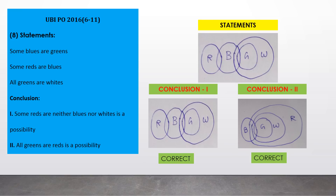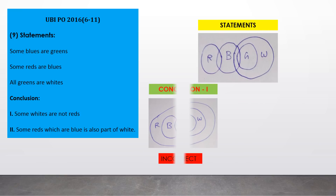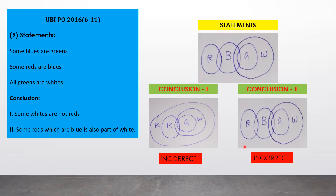Question 10 — Same statements. Conclusion one: 'some whites are not red.' To disprove, draw complete white inside red, then check — 'some blues are greens' yes, 'some reds are blues' yes, 'all greens are whites' yes. A diagram exists contradicting the conclusion, so conclusion one is wrong. Conclusion two: 'some reds which are blue are also part of white' — but from the first basic diagram some portion of red which is blue is not part of white, so this conclusion is also false. Answer: option D.